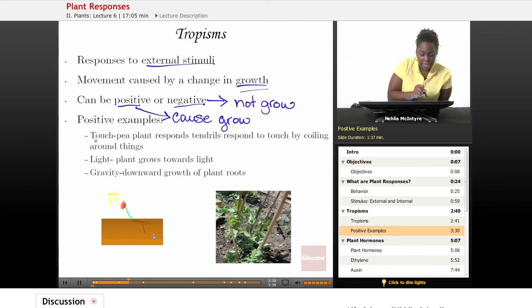For example, a touch would be a tropism, and a pea plant that responds to touching, for example, this stick here. Here are some pea plants. Once it touches that stick, it actually wants to wrap its stem around that wooden stick, and the pea plant responds to that touch of the stick by growing these tendrils, and these tendrils coil around other things.